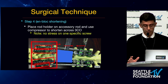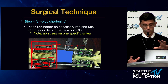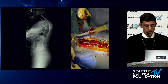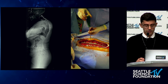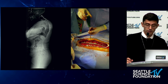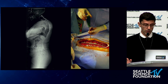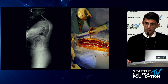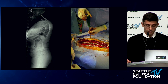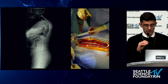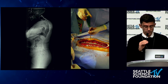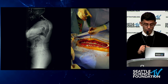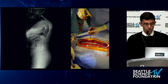A patient of mine with multiple myeloma — I had done a front-back cervical operation, a three-level corpectomy, then C2 to T2. She failed distally because of very poor bone quality, so we extended her down to L1–L2 and used the rail technique to shorten her and correct the deformity in the upper thoracic spine.